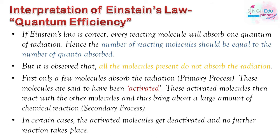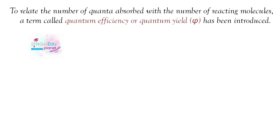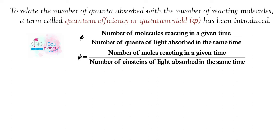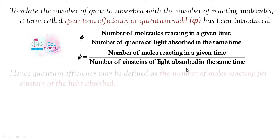In some cases, activated molecules deactivate and reactions do not occur. To relate quanta absorbed and number of reacting molecules, we define quantum efficiency, also called quantum yield (φ). The formula is: φ = number of molecules reacting in a given time divided by the number of light quanta absorbed in the same time.